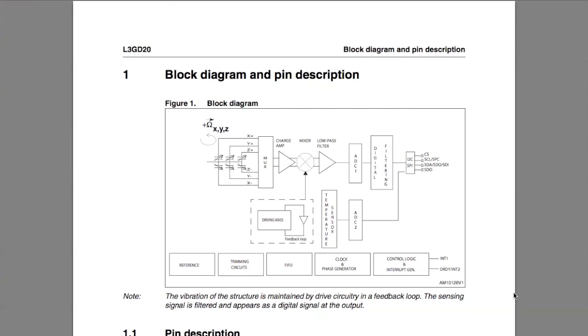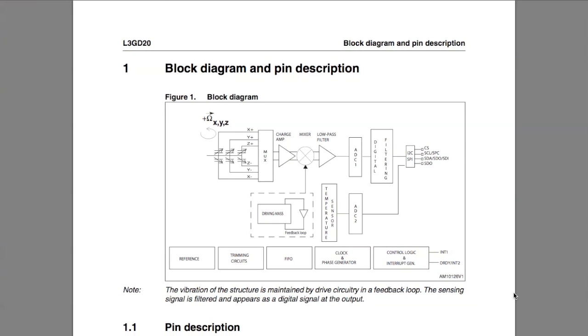And here we come to the block diagram and pin description of our sensor. The first part of this diagram shows the actual hardware that converts rotational motion into an electrical signal, voltage. The changing voltage then goes through an analog low-pass filter to reduce the high-frequency noise in the signal prior to going through the analog-to-digital converter.